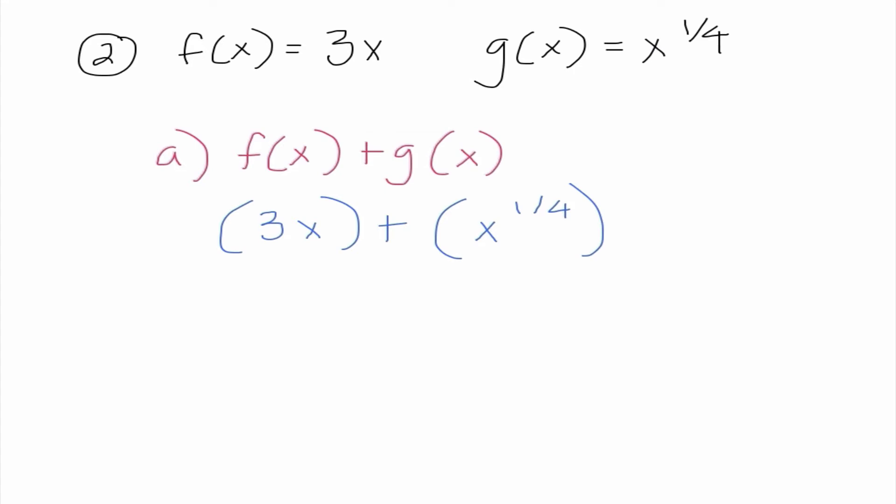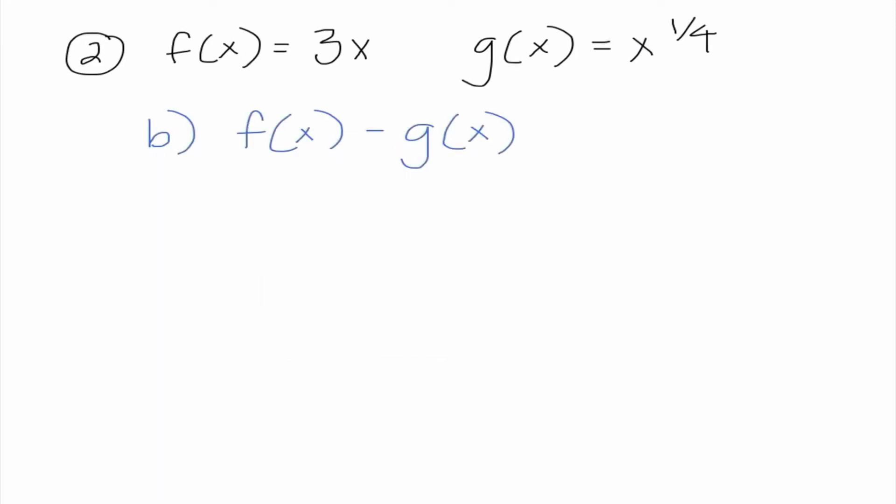So I'm going to go ahead and do 3x plus x to the 1/4th. And all of a sudden, I notice a problem. These are not like terms because we know in order to have like terms, we need the same variable to the same degree. So my final answer is just 3x plus x to the 1/4th power. Of course, if we want to, we know x to the 1/4th is equivalent to the 4th root of x.